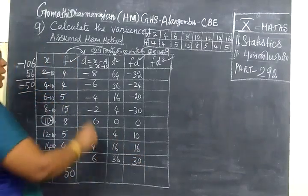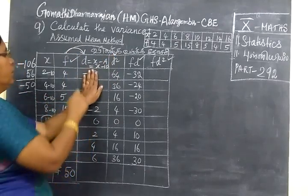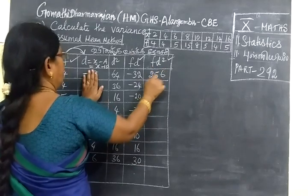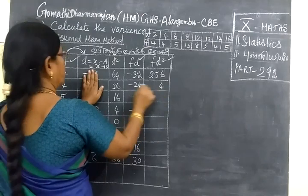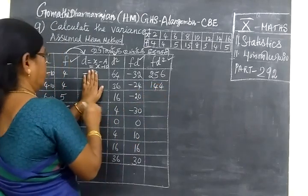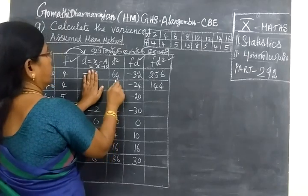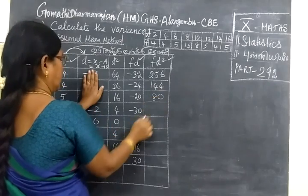Next you find FD square. This is 4 times 16 which is 64, then 6 times 24 is 144. Then FD square, 6 times 30 is 180.